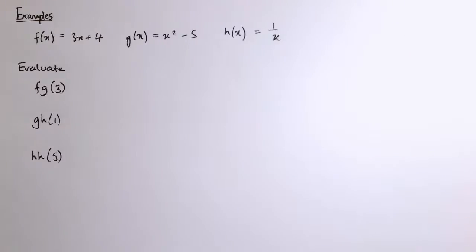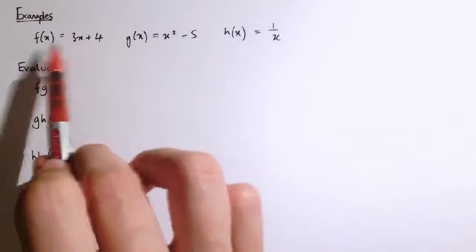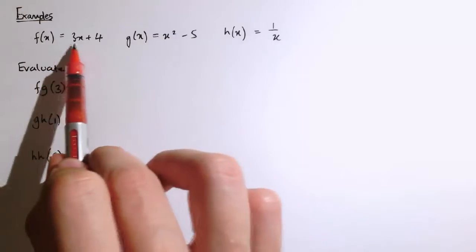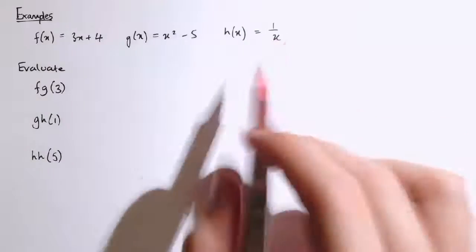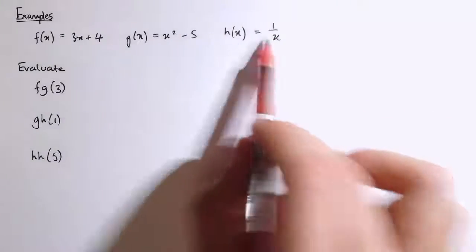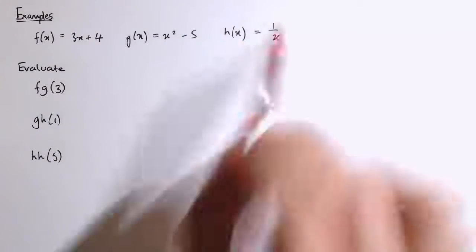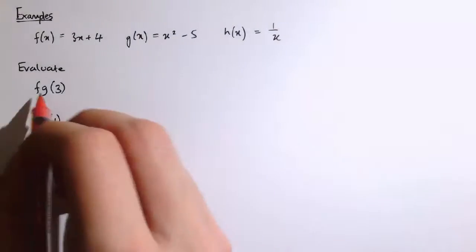So here are a few example questions. I've got three functions here, defined f of x equals 3x plus 4, g of x is x squared minus 5, and h of x equals 1 over x, so that's the reciprocal function. It just takes a value of x to its reciprocal of 1 over x.